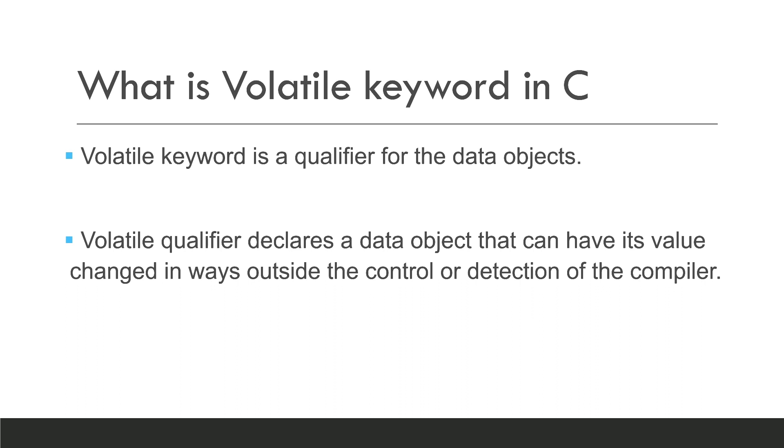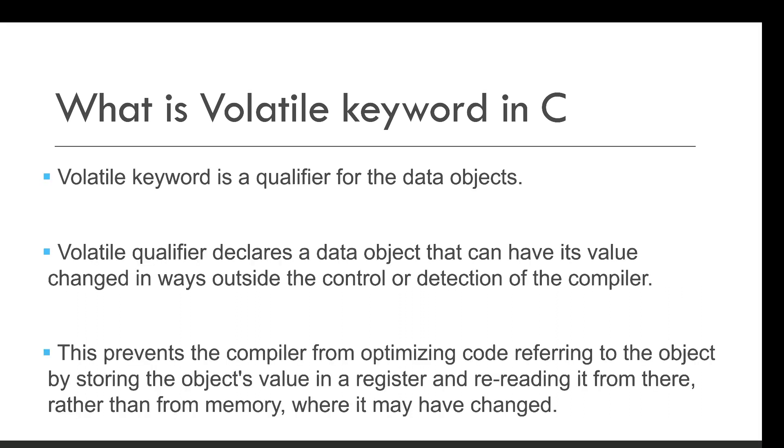Volatile prevents the compiler from optimizing code by storing the object's value in a register and re-reading it from there, rather than from memory where it may have changed.